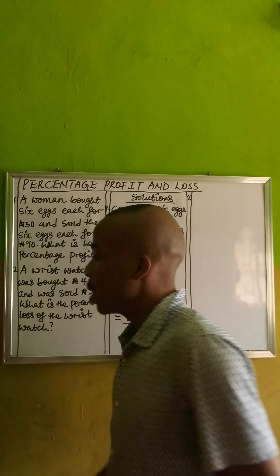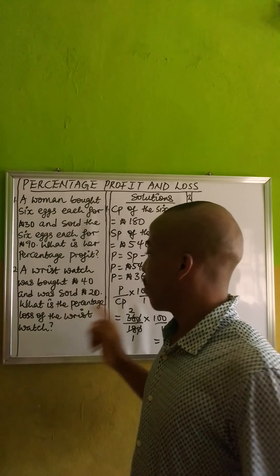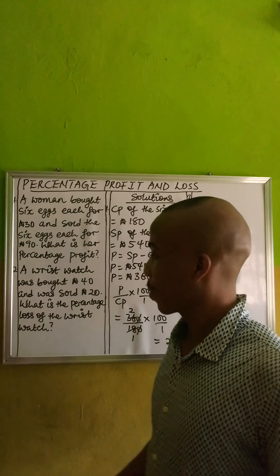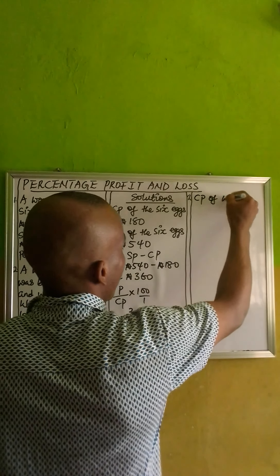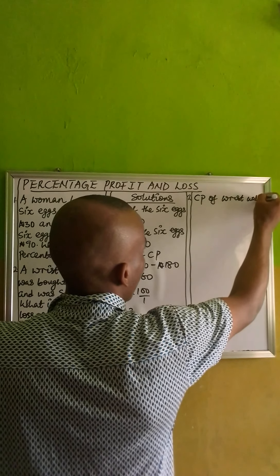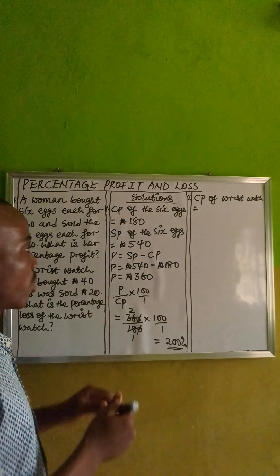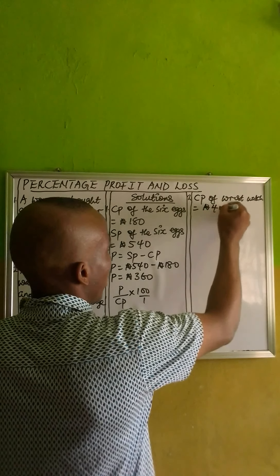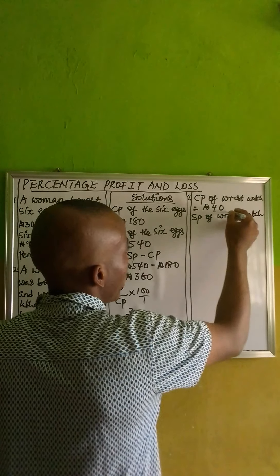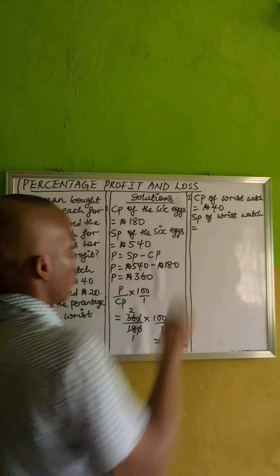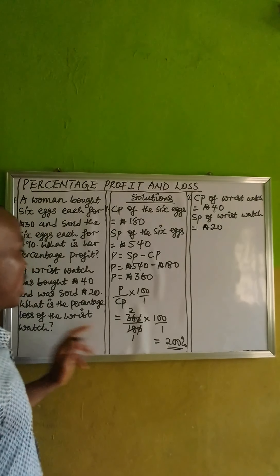It says: a wristwatch was bought for 40 Naira and was sold for 30 Naira. What is the percentage loss of the wristwatch? Now, we can say that the cost price — CP — of the wristwatch: from the question, it says the wristwatch was bought, which means this is the cost price. It was bought for 40 Naira. Then SP, selling price of the wristwatch — the selling price is 20 Naira.